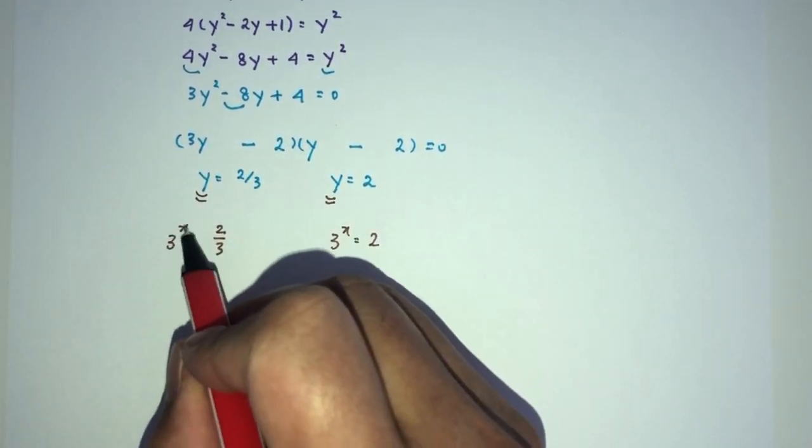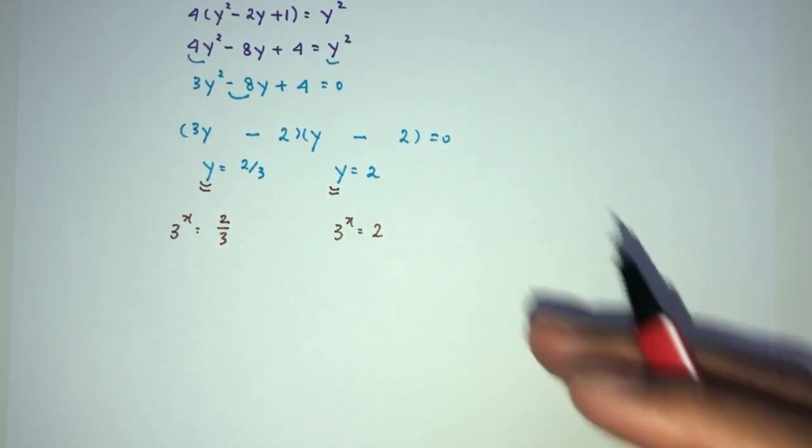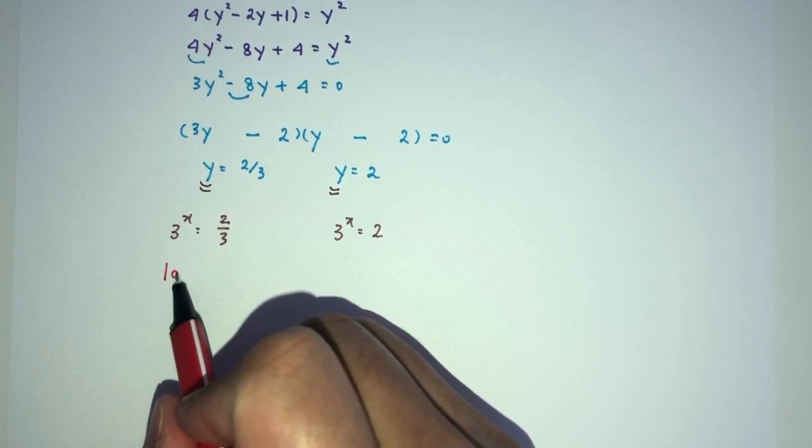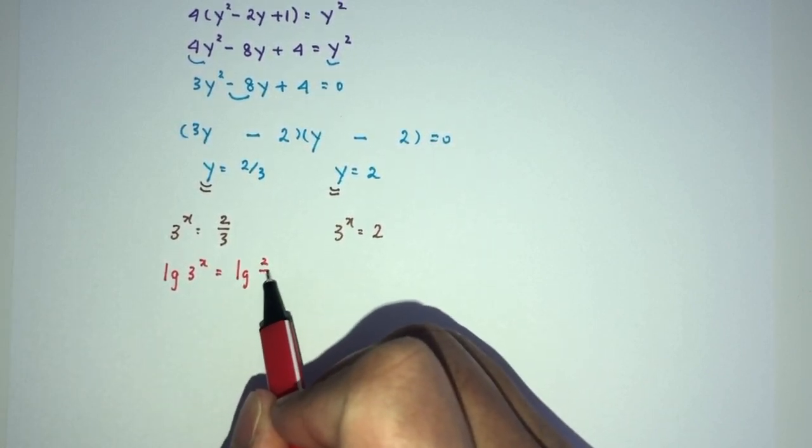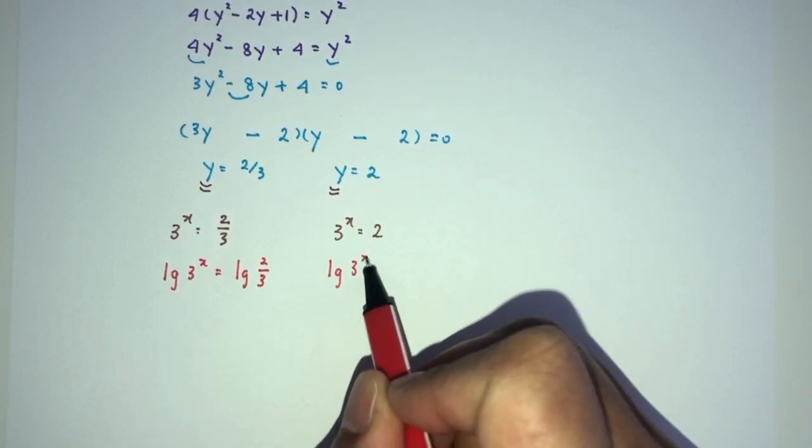Now, the power is up here. It is x is the power. We have to bring it down. We have to apply log on both sides. Now, you can choose log or ln. It doesn't really matter here. We can use both. Have this. And here you will have this.